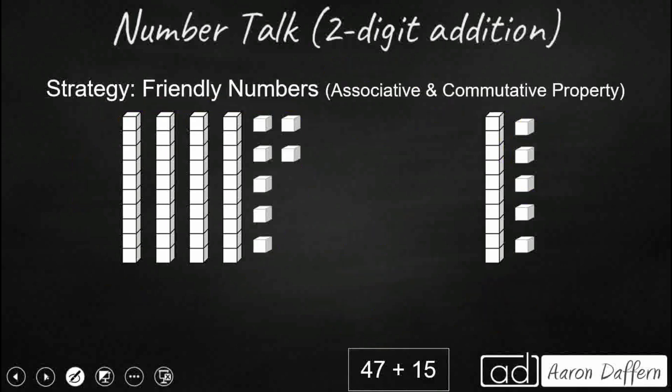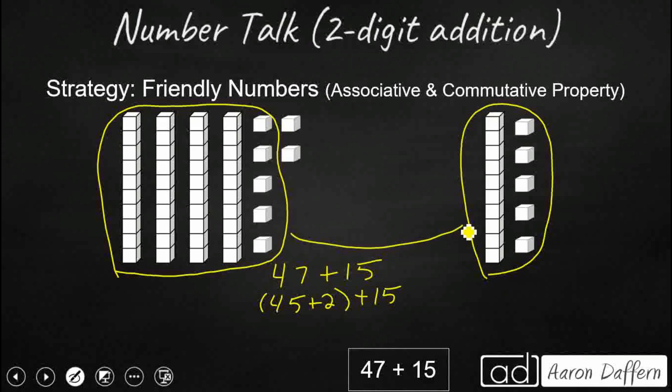We could also use the associative property to do some friendly numbers. So friendly numbers are just numbers that are a little bit easier to add up. So we're going to take our 47 and 15, and we're going to say, you know what, that 47, it's really close to 45. So I'm going to break up the 47 into 45 and 2. So I've got 45 plus 2 plus 15. Now what that does here is I'm going to take my 45, and then I'm going to take my 15.